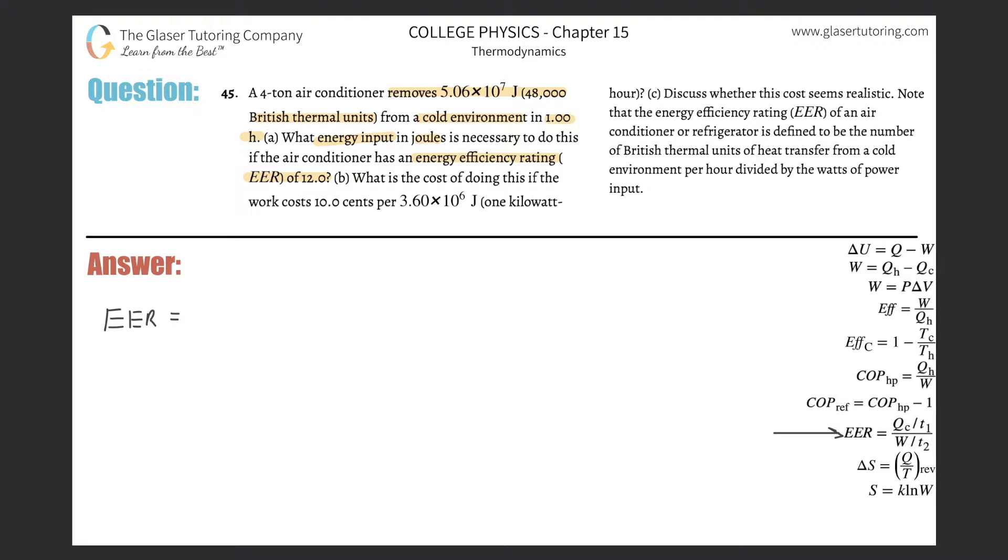So the formula is telling us that it's basically the heat removed from the cold environment divided by the time T1, and by the way, that time is in hours. This time here is in hours, divided then by the work done, or the work inputted in order to remove this particular amount of heat, divided by then the time T2, which is in seconds.